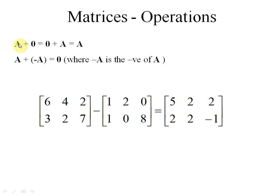Some properties: if we add any matrix with the zero matrix, there is no change. This is called the additive identity — 0 is the additive identity. For example, 1 plus 0 is 1, 500 plus 0 is 500. Also, if we add a matrix A with its negative, it becomes 0 — A plus (−A) equals 0. For subtraction: 6 minus 1 is 5, 4 minus 2 is 2, 2 minus 0 is 2, 3 minus 1 is 2, 2 minus 0 is 2, and 7 minus 8 is minus 1.